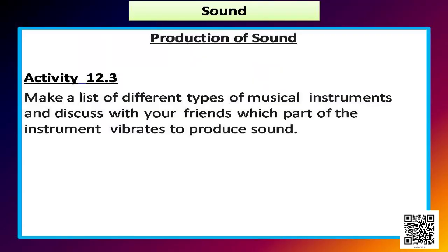There is another activity for you — activity 12.3 — to make a list of different types of musical instruments and discuss with your friends which part of the instrument vibrates to produce sound. All musical instruments produce different kinds of sound by the vibration of different parts of their body.